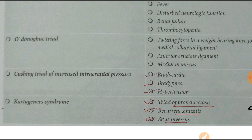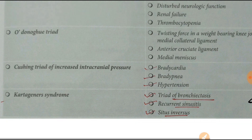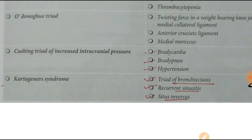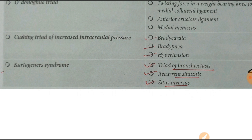Next one is Cushing's triad of increased intracranial pressure: bradycardia, bradypnea, and hypertension. Generally bradycardia and bradypnea with hypertension is only in Cushing's triad — otherwise in hypertension there is tachycardia. Kartagener's syndrome triad is: bronchiectasis, recurrent sinusitis, and situs inversus.